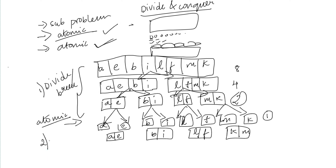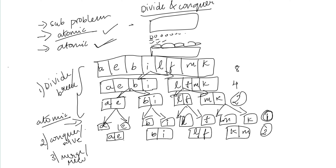This is the second stage: conquer and solve. We solve each small atomic sub-problem. Then we merge the solutions recursively, combining the sorted pairs back together.